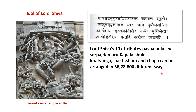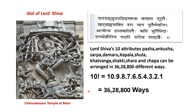As per our discussion, Lord Shiva's 10 attributes — Pasha, Ankusha, Sarpa, Damaru, Kapala, Shula, Katvanga, Shakti, Shara, and Dhanush — can be arranged in 10 factorial ways, which equals 36,28,800 ways. Amazing! These many forms of Lord Shiva. This idol of Lord Shiva with 10 hands is very rarely found, and it is at the Channakeshava Temple at Belur in Karnataka.